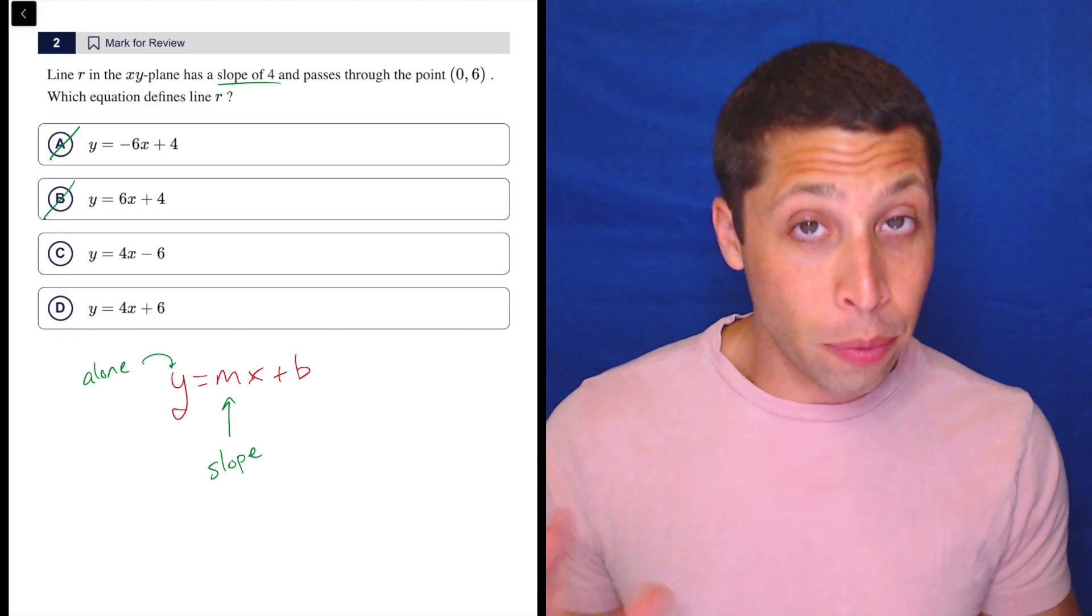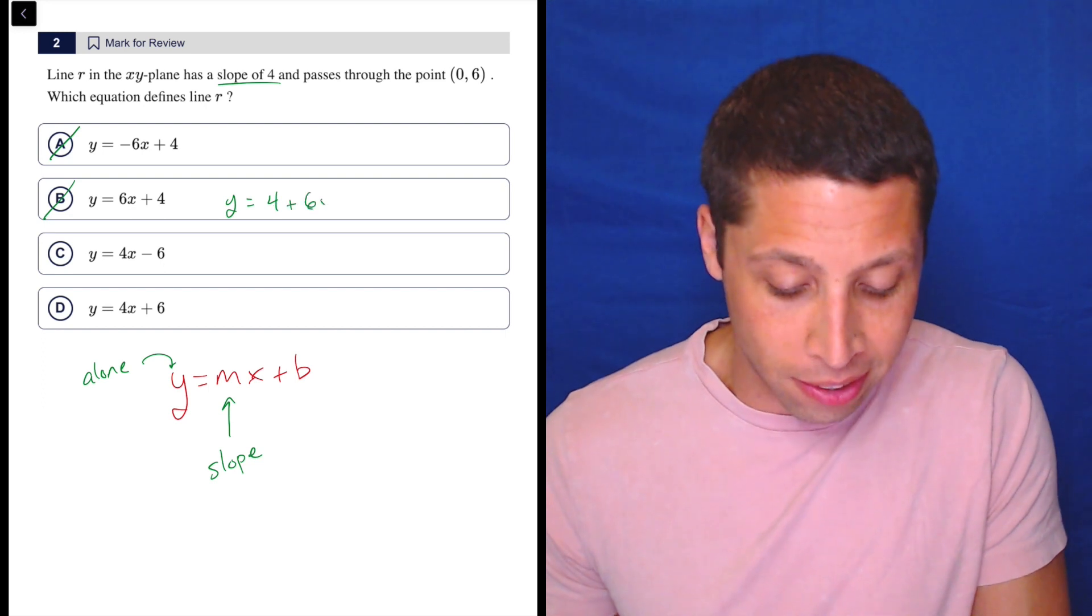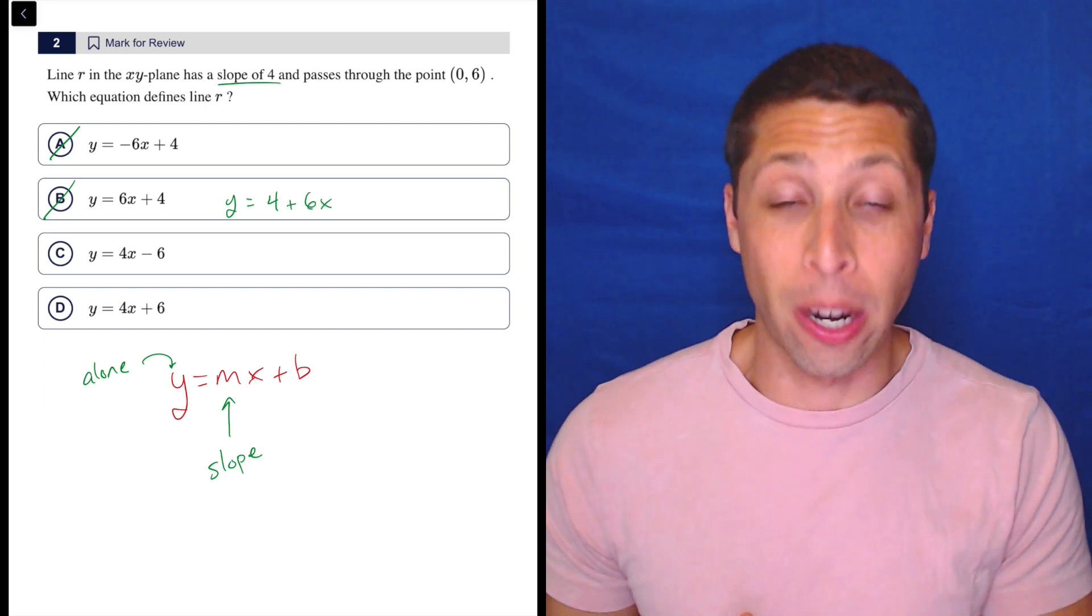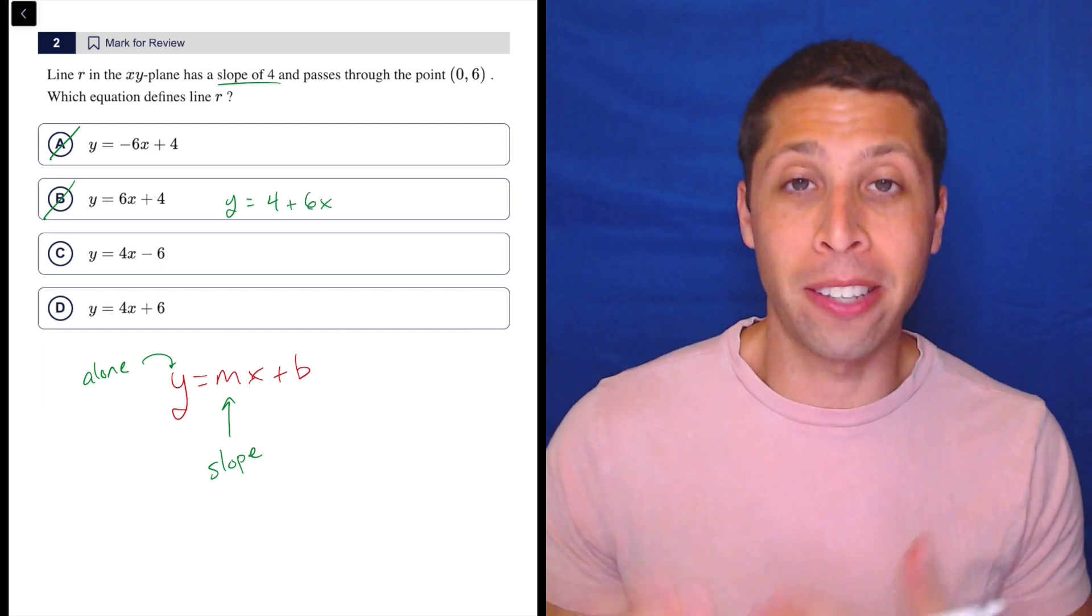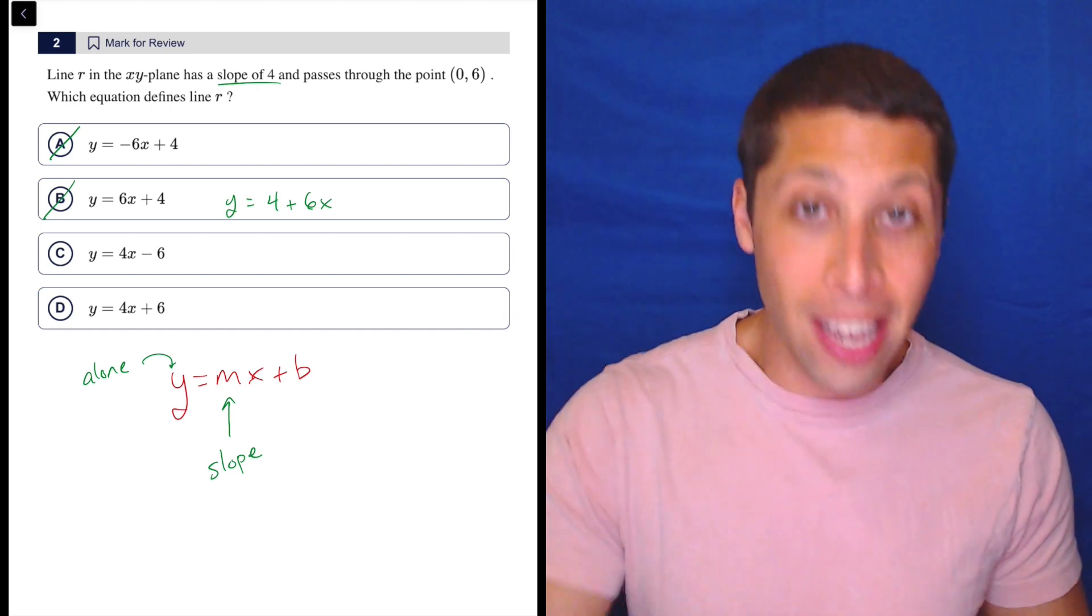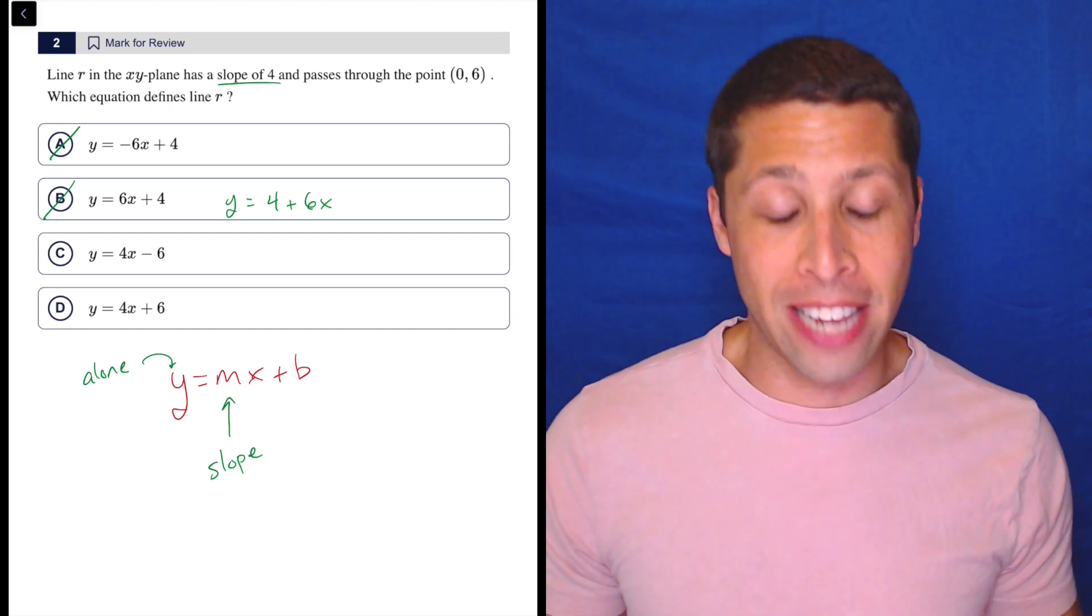Just to be clear though, even if it was something like y equals 4 plus 6x, which is mathematically equivalent, it still would be the case that the slope of choice b is 6 because that's what's attached to the x.